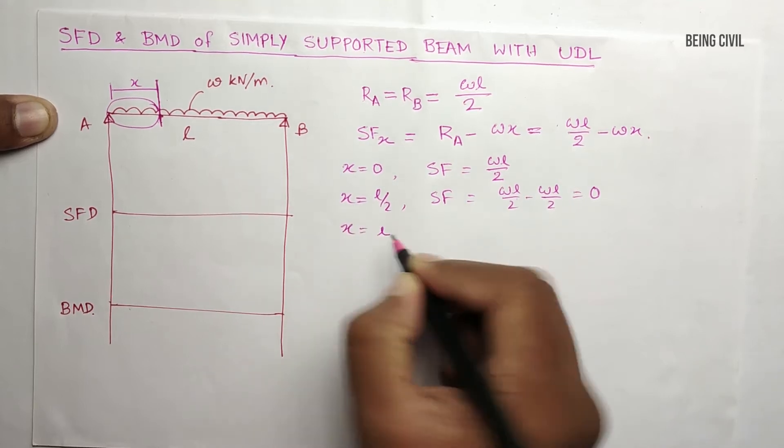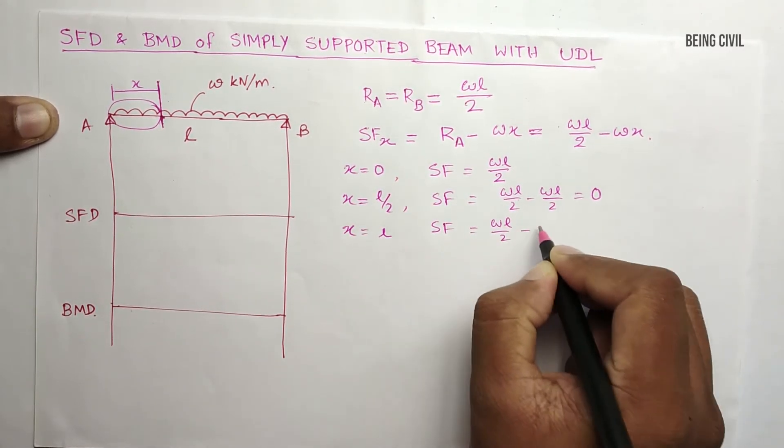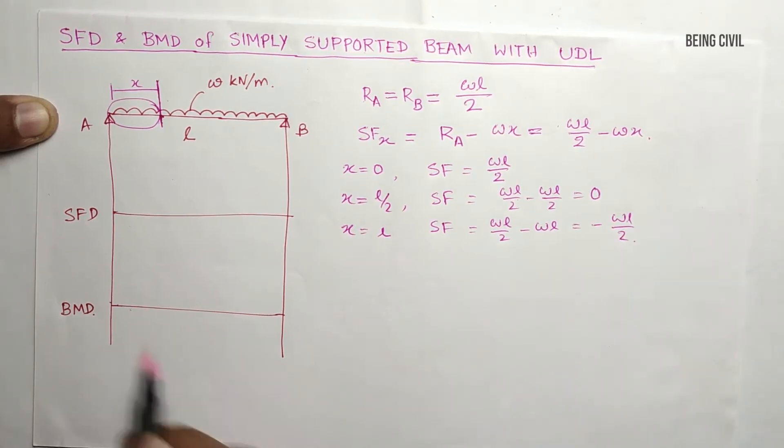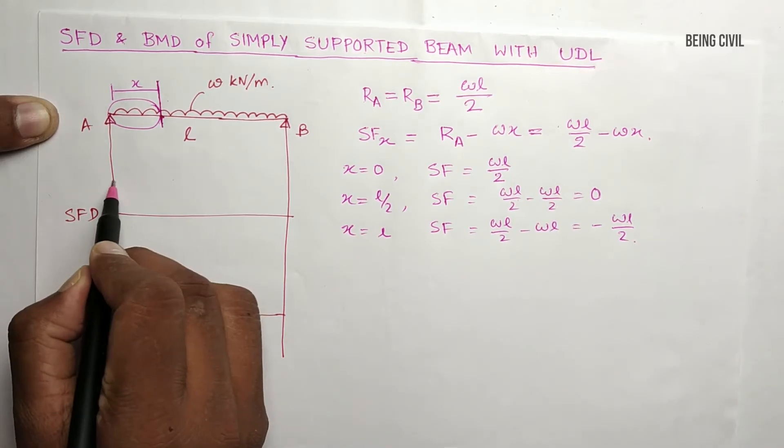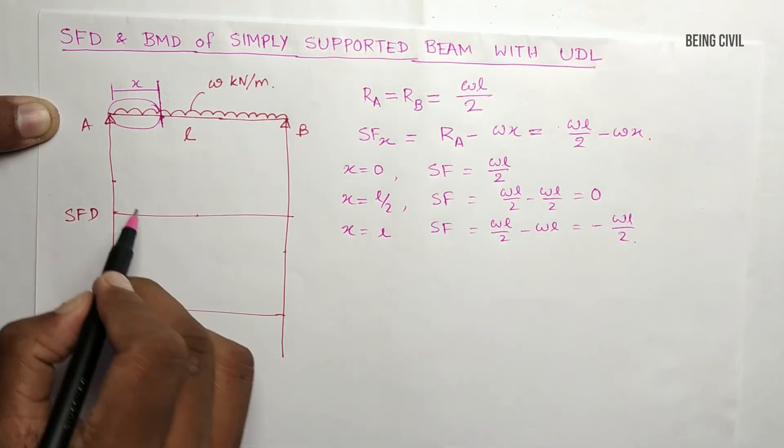At a distance of L, shear force is WL by 2 minus WL equals minus WL by 2. So the shear force diagram will be here WL by 2, at midpoint is 0, and here minus WL by 2. This is the shear force diagram.